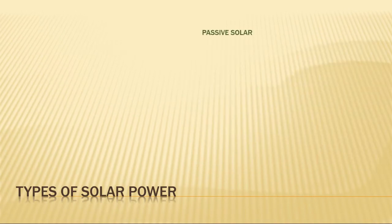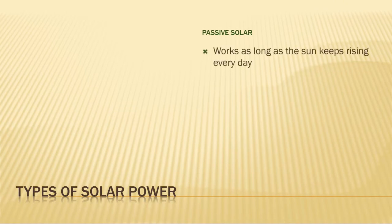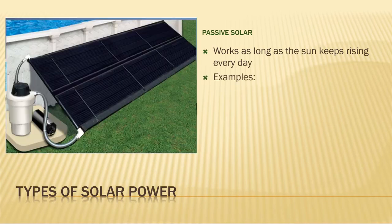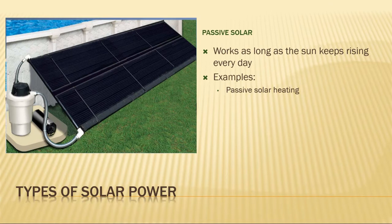Another way of harnessing the sun's energy is through passive solar technologies. These systems are designed to operate using nothing but the sun's energy, so as long as the sun keeps rising every day, they will keep working. For example, passive solar heaters like this one are often used to warm the water in a swimming pool. As the water circulates through the pool pump, it can be sent on an extra journey through the winding black pipes. The sun warms the water significantly before it returns to the pool.